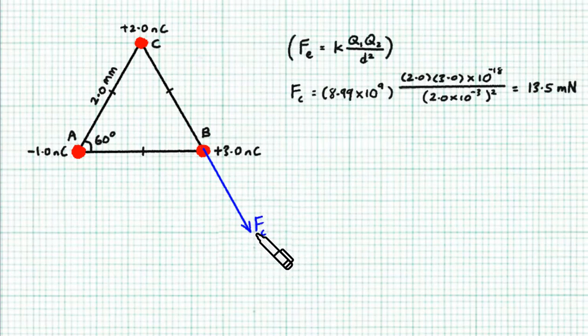The magnitude of this force can be calculated using Coulomb's law, kqq over d squared. Just put in the values of 2 and 3 nanocoulombs for the charges, divided by the square of the distance between them. So the repulsion force turns out to be 13.5 millinewtons.